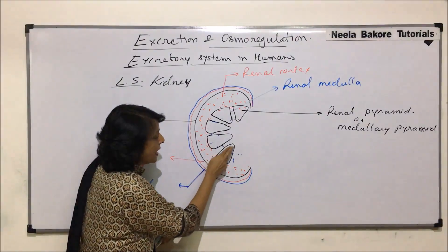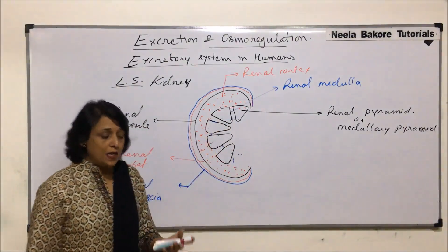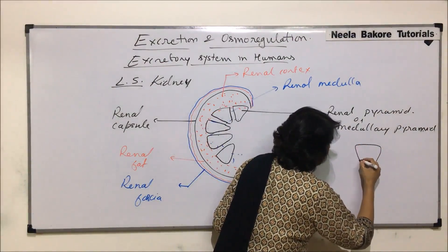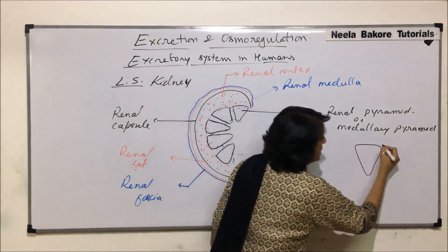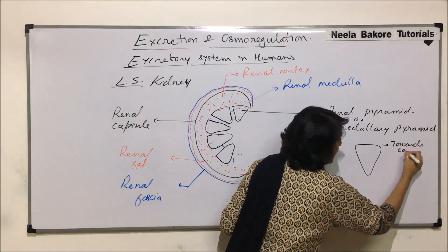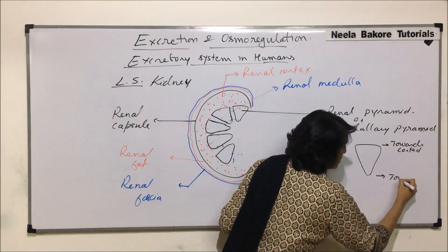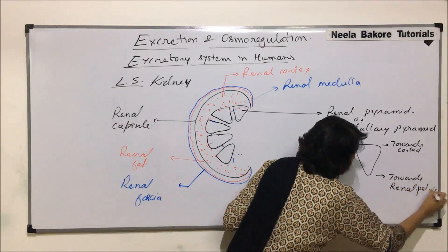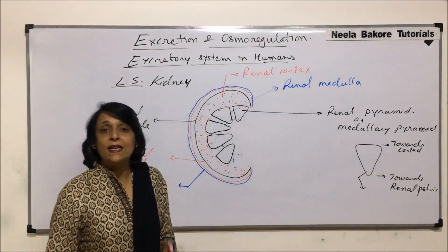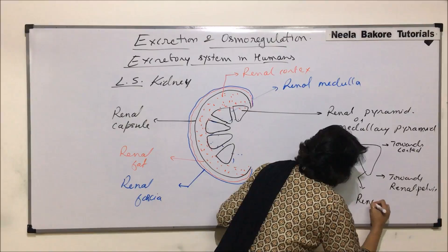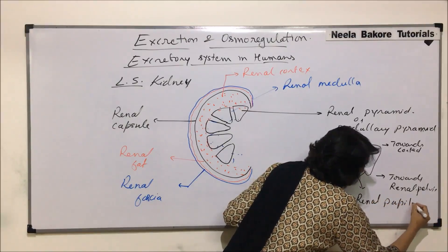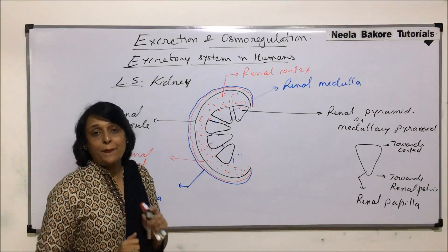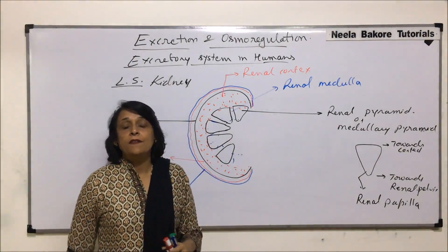The broader part of each pyramid is towards the cortex and the narrower part is towards the central region, which we call the renal pelvis. This shape is conical, and that is why we call it a renal pyramid. The narrow portion of the pyramid is known as the renal papilla. All these narrow portions are the renal papillae.